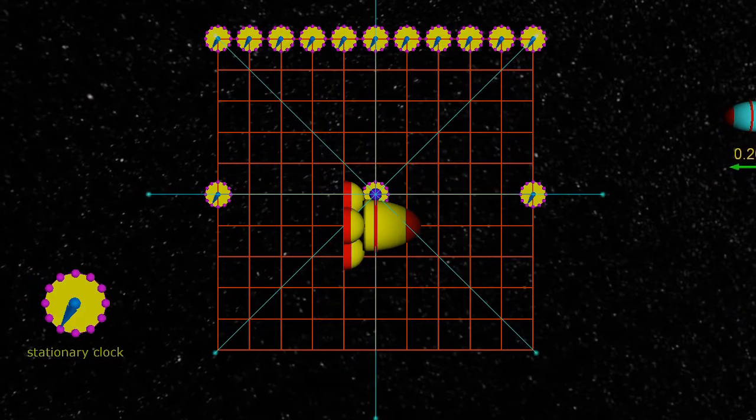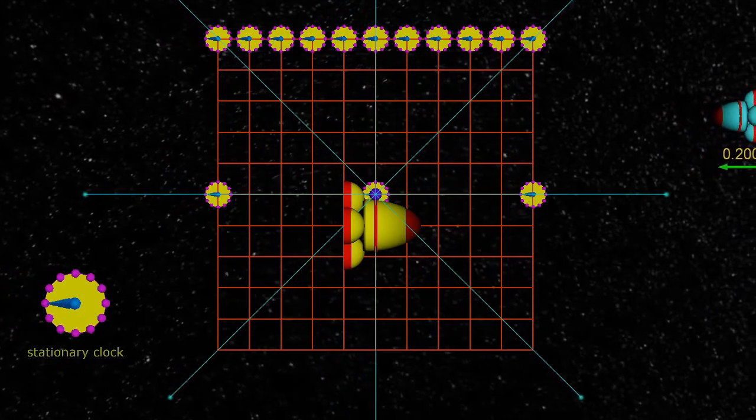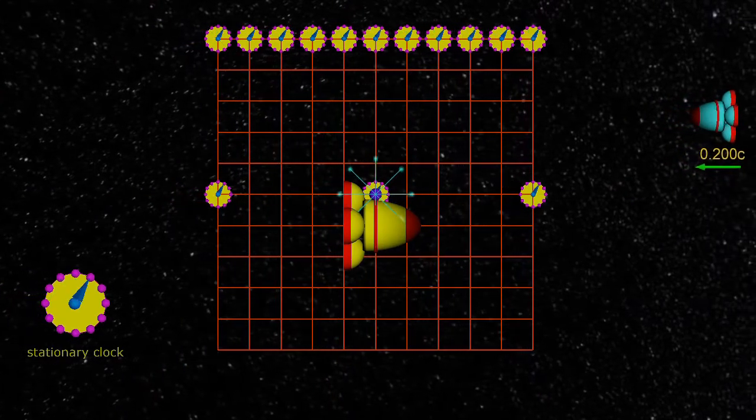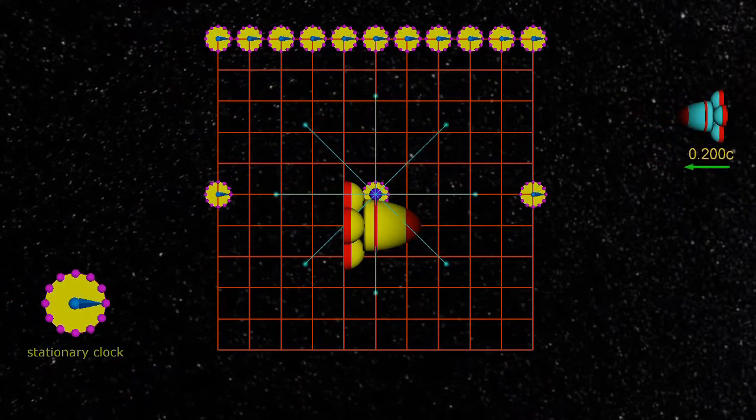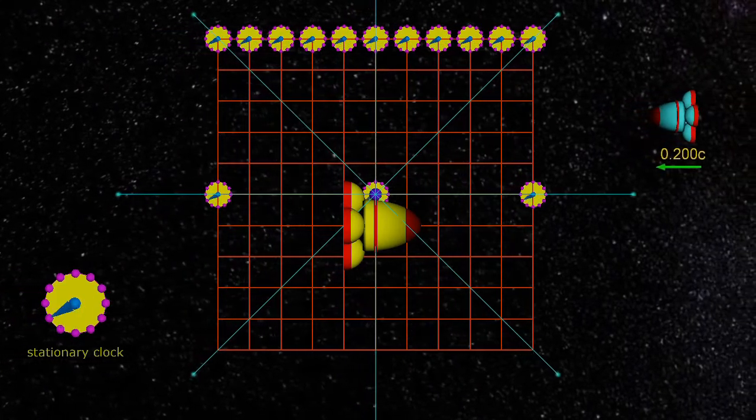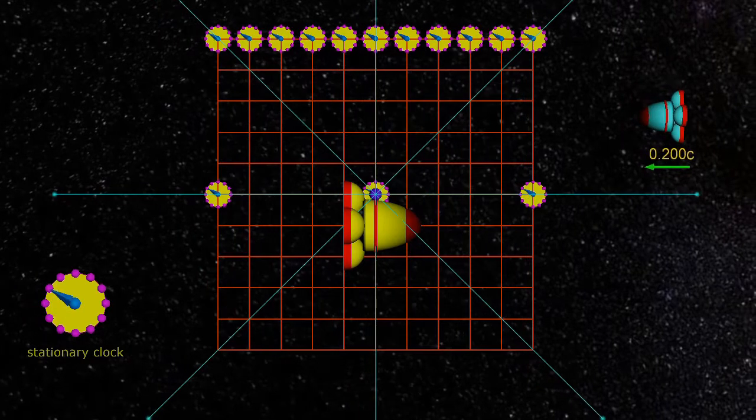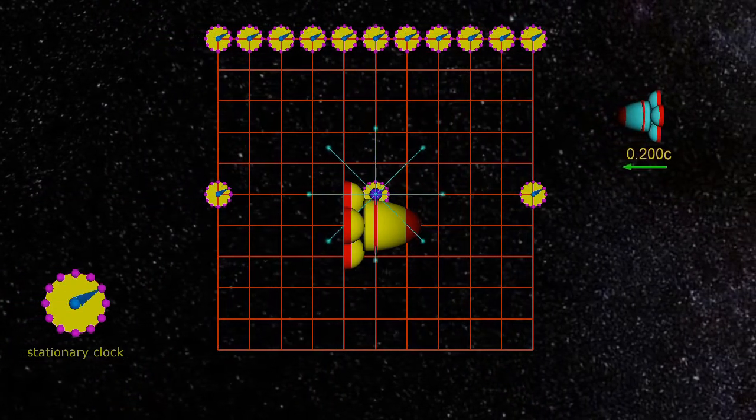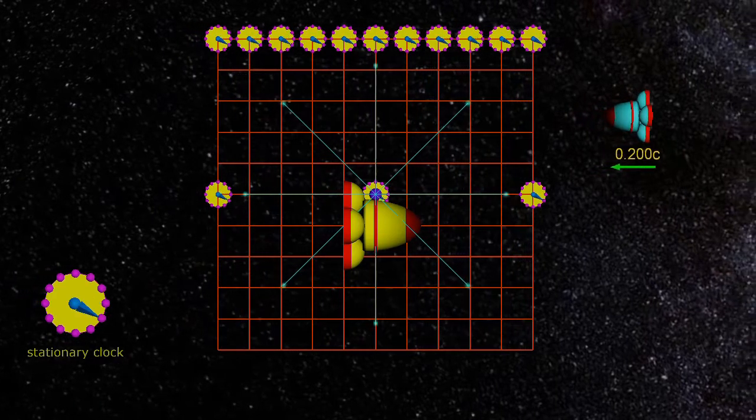So for a blue spacecraft drifting past, observing the same events, it will get the same readings, the same positions in the grid system and the same times for each event. And each photon will go through exactly the same intersections that we see the photons go through.